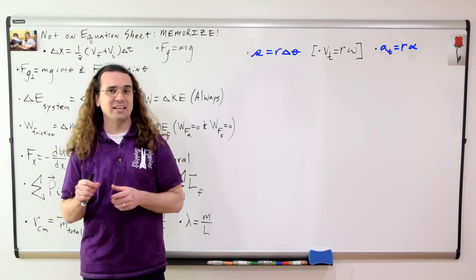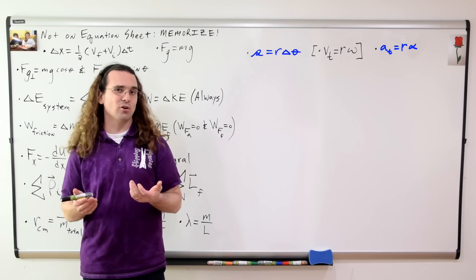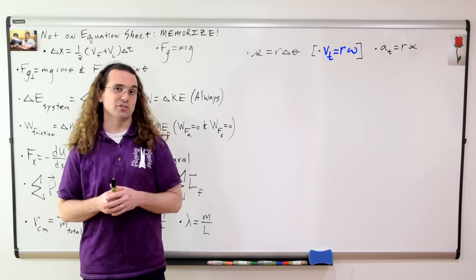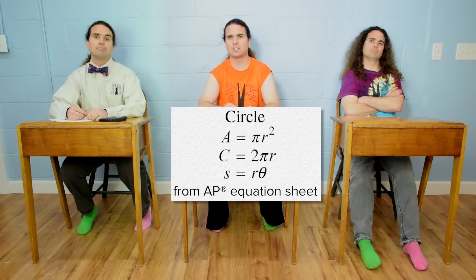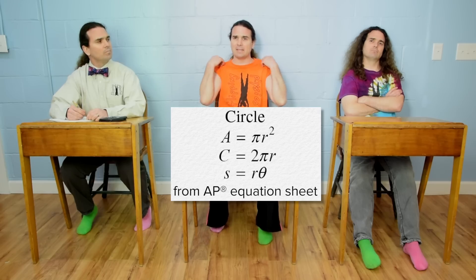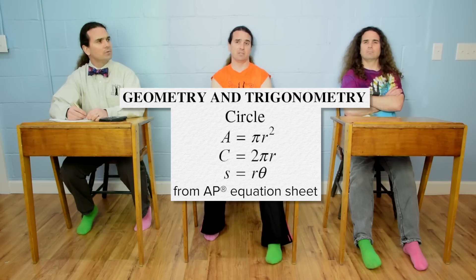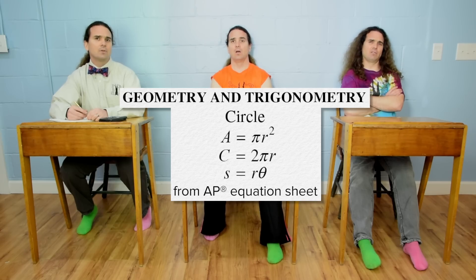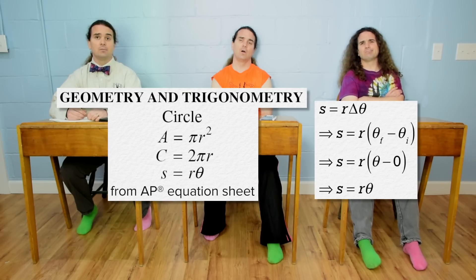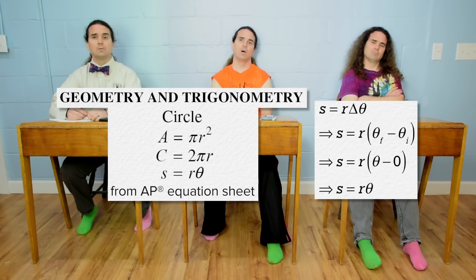The equations for arc length and tangential acceleration are not on the equation sheet, even though the equation for tangential velocity is on the equation sheet. Actually, the equation for arc length — I found it on the equation sheet. It's just not quite where you would expect it to be. It's in the geometry and trigonometry section. But that says s equals r theta. Where did the delta go? s equals r theta assumes the initial angular position is zero instead of using the change in angular position. I'd actually never noticed that equation there before, although it is missing the delta, which I do consider very important.